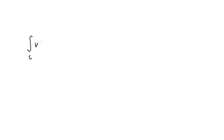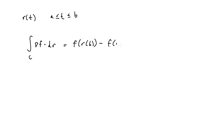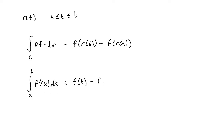Now moving on to the actual fundamental theorem for line integrals. If you have the integral along path c of the dot product of the gradient vector of f and dr, given that r(t) ranges over t bounds from a to b, the fundamental theorem states this equals f(r(b)) minus f(r(a)). This is analogous to the fundamental theorem of calculus, where the integral from a to b of f'(x) dx equals f(b) minus f(a).